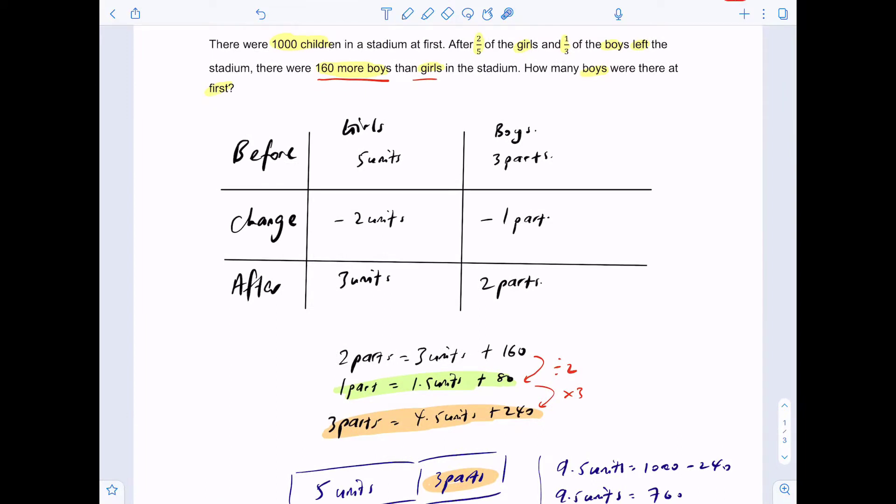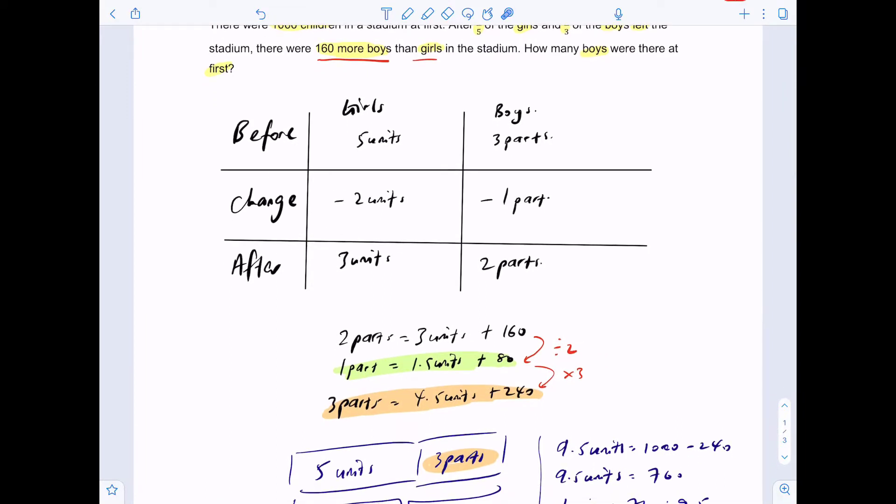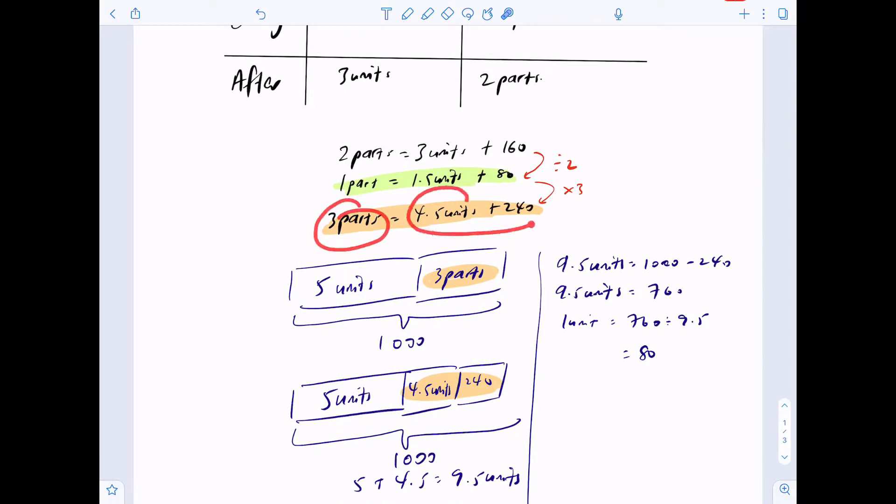How many boys were there at first? Boys is three parts, or four and a half units plus 240. What's 4.5 units? 80 times 4.5 is 360. Don't forget, you have to add 240 to that because three parts is four and a half units plus 240. So 360 plus 240 gives us a final answer of 600 boys at first.